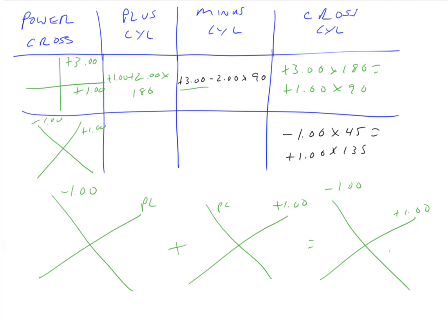And once you have your power cross, you can do anything. So now let's do plus cylinder. So for plus cylinder notation, again we find the smallest number on there and that's our spherical lens. The smallest number is minus one, so our spherical lens must be minus one.